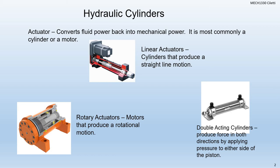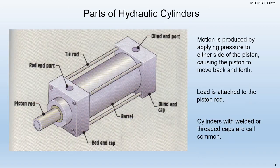We also have double-acting cylinders that can produce forces in both directions, but we're going to get into those parts a little bit more shortly. One of the outputs of an actuator that we're going to get into in this chapter is strictly all cylinders. We're going to talk about motors in a different chapter. So, different parts of the hydraulic cylinder.